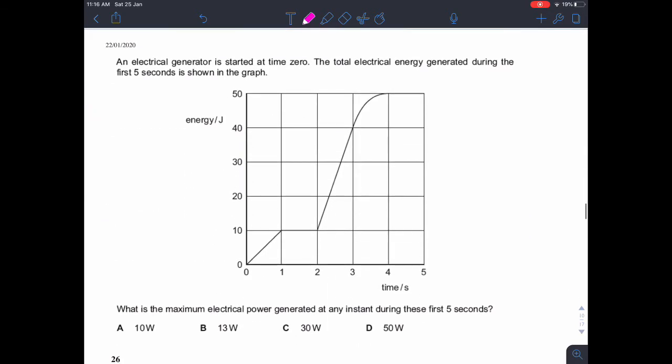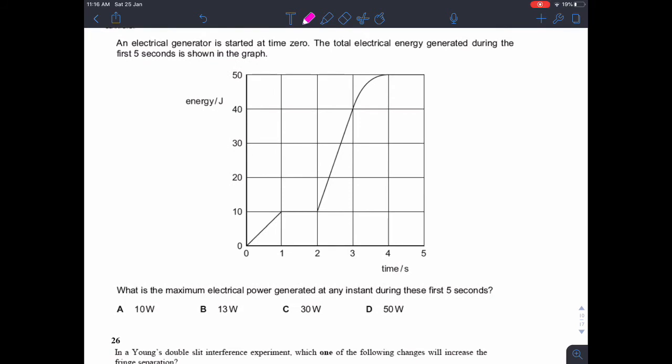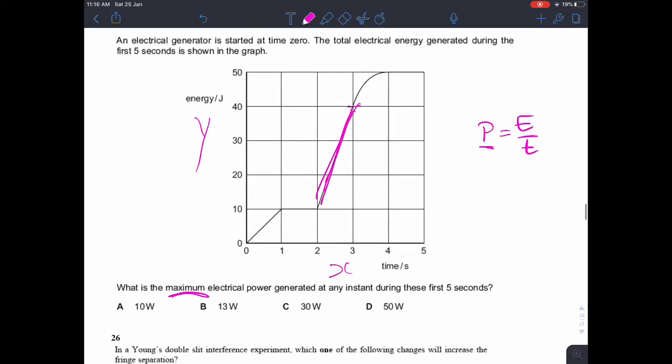Question 25. You've got a graph for energy against time for an electrical generator, and you want to find the maximum electrical power. Well, in any graph, we know that power is energy divided by time. And in any graph, if you want to do the y-axis divided by the x-axis, that's the gradient. So the power here is the gradient of this graph. Now the steepest gradient is found in this section here. Then you just have to, because we're after the maximum electrical power, we're after the maximum gradient. So there's the steepest gradient. And that goes, the change in y is 40 to 10. So that's 30. The change in x is 1, so 30 divided by 1 is 30 watts.